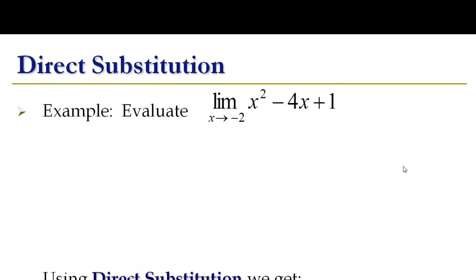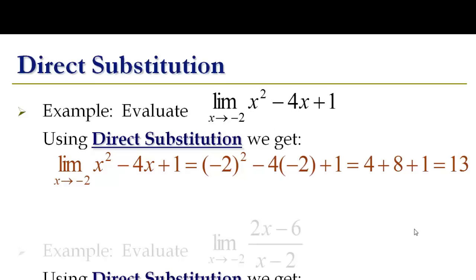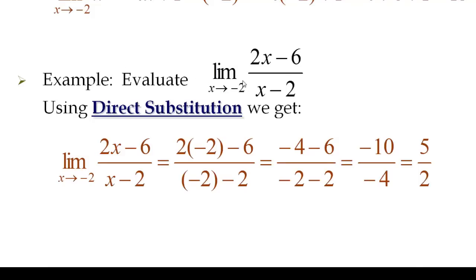Let's look at some examples. Evaluate the limit of x squared minus 4x plus 1 as x approaches negative 2. Using direct substitution, we replace x with negative 2: negative 2 squared minus 4 times negative 2 plus 1, which equals 13. So the limit of this function as x approaches negative 2 is 13. Here's a rational function: the limit of 2x minus 6 over x minus 2 as x approaches negative 2. Using direct substitution, 2 times negative 2 minus 6 over negative 2 minus 2 gives us 5 over 2, or 2.5. So the limit is 5 over 2 — faster than using graphical or numeric means.